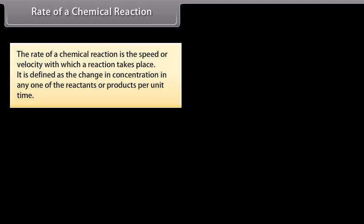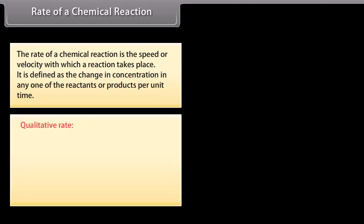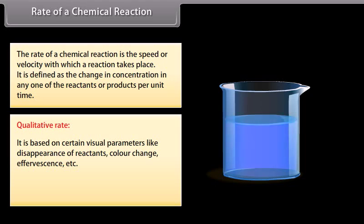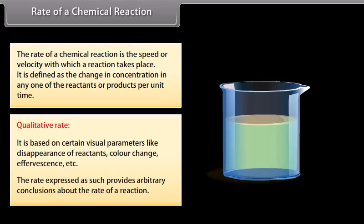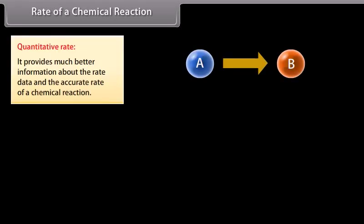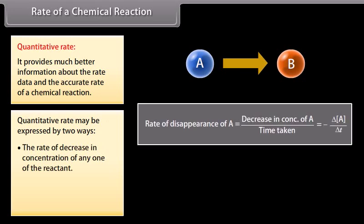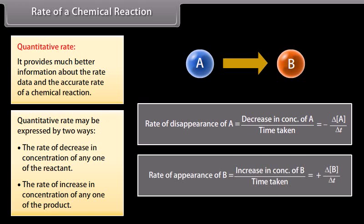The rate of a chemical reaction is the speed or velocity with which a reaction takes place. It is defined as the change in concentration in any one of the reactants or products per unit time. It can be expressed by two ways: qualitative rate, which is based on certain visual parameters like disappearance of reactants, colour change, effervescence, etc., providing arbitrary conclusions; and quantitative rate, which provides much better information about the rate data. Quantitative rate may be expressed as the rate of decrease in concentration of any one of the reactants, or the rate of increase in concentration of any one of the products.